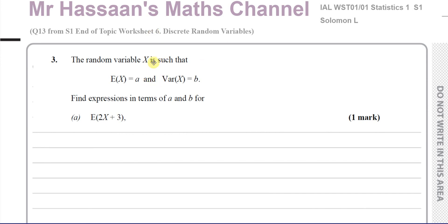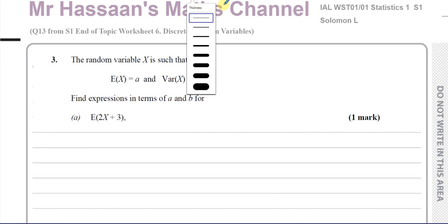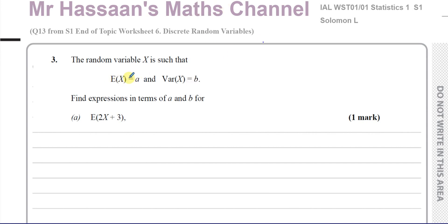Here we're told that the random variable x is such that the expected value of x, or the mean of x, is a, and the variance of x is b. Find expressions in terms of a and b. First of all, E(2x+3). So we know that E(x) equals a and Var(x) equals b.